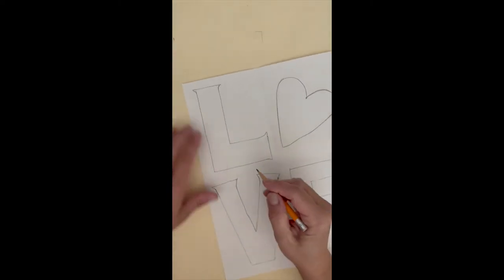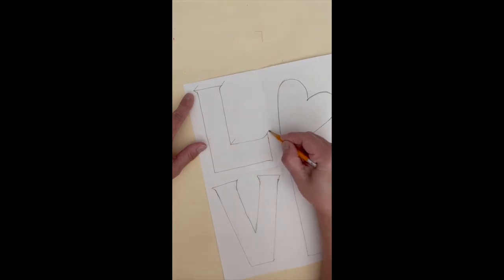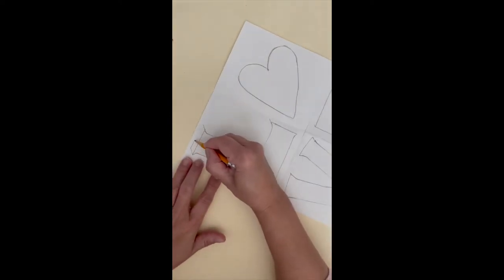Right now, my letters are flat. I'm going to give them three-dimensionality by putting slanted lines on the corners, and then I'm going to connect those lines.